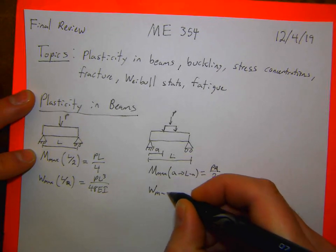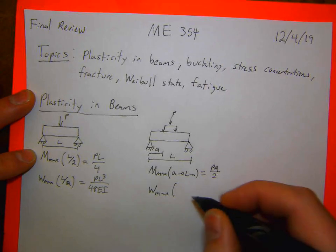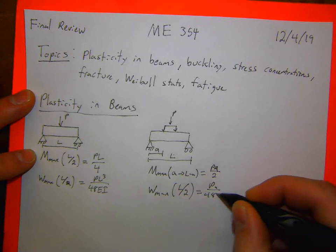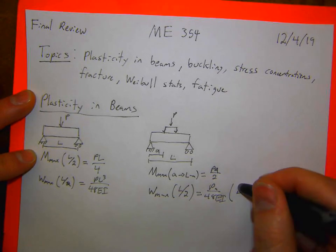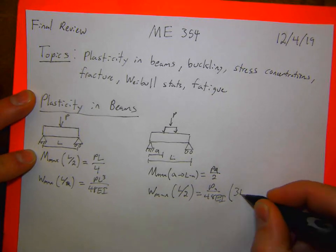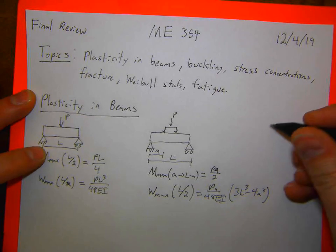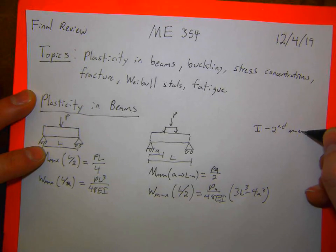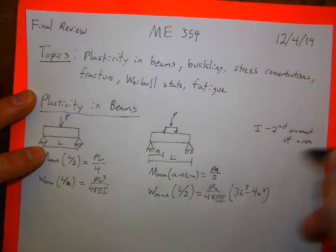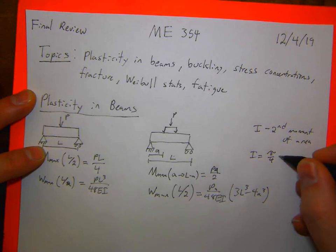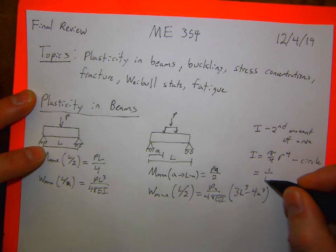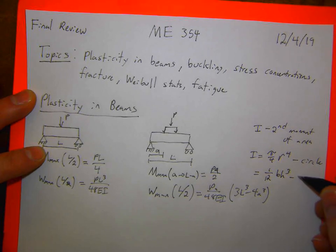The displacement max for four-point bending is PA/(48EI) × (3L² − 4A²) — you probably don't need to know that. The second moment of area I equals πR⁴/4 for a circle, and (1/12)BH³ for a rectangle of height H and width B.